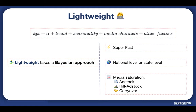Lightweight MMM can be run using data aggregated at the national level or the geo level. National level means country-level data, which is the most common format used in MMMs. Geo level is when data is aggregated at a sub-national level — state level within a country. For a bigger country like the US, this approach can yield more accurate results as it uses more data points to fit the model.